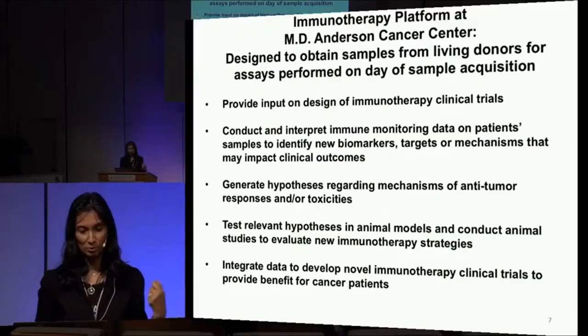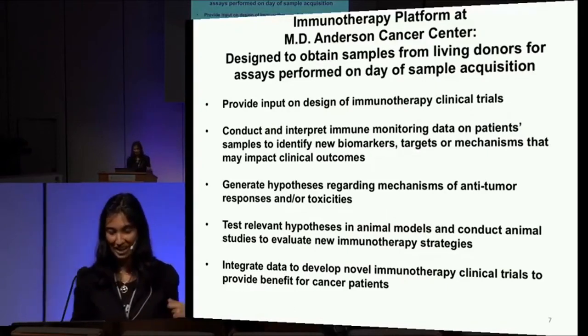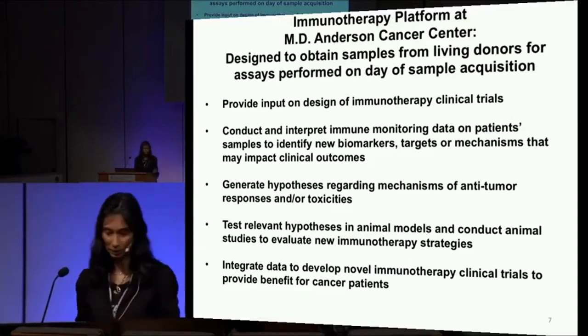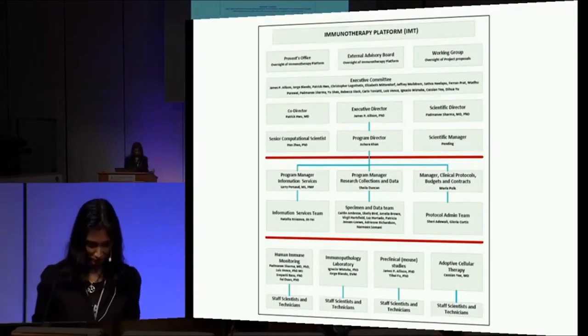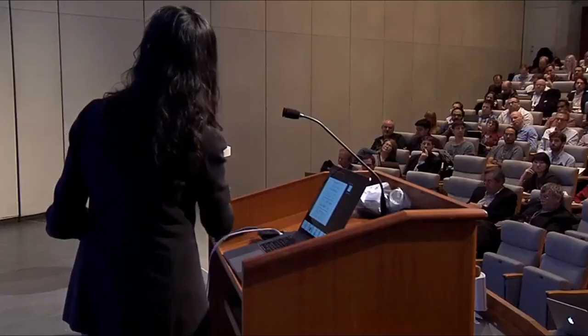We generate the hypotheses and test them in models to validate what we think is correct. Then we integrate the data in real time to develop the next clinical trial even as the first clinical trial is ongoing. When we set up the immunotherapy platform, it started as a vision of just a few scientists. Now it's over 100 people. A lot of it has to do with informed consent and sample collection — the whole tracking of samples, de-identification, making sure informed consent is done properly. The regulatory piece is most of the work.